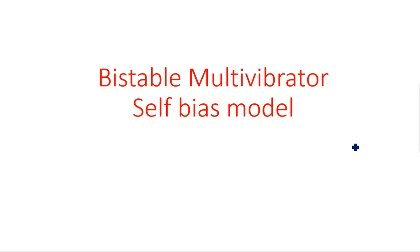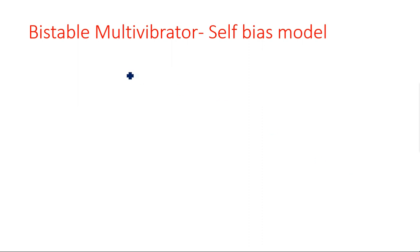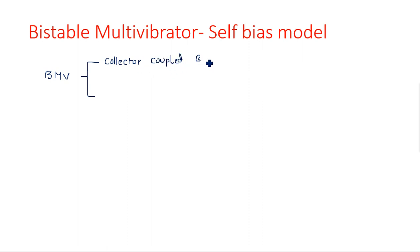In this video I am going to explain the bistable multivibrator second type, which is a self-biased network or self-biased model. If you see the classifications of bistable multivibrator, there are two types: one is collector coupled bistable multivibrator and the second one is emitter coupled bistable multivibrator.